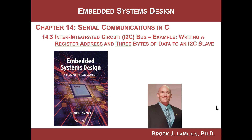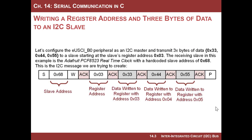Here is our task. We are going to create a packet, a message that is going to address a slave with a hard-coded address of 68 — that happens to be our I2C real-time clock. Then we are going to initiate a write, send the register address, and then send 33, 44, and 55.